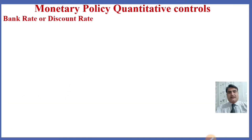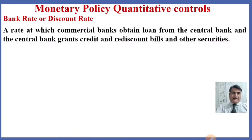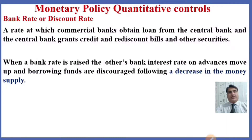What is bank rate or discount rate and how does it function to control money supply? The bank rate is the rate at which commercial banks obtain loans from the central bank, and the central bank grants credit and rediscounts bills and other securities. When the bank rate is raised, other banks' interest rates on advances move up, borrowing funds are discouraged, and money supply decreases.